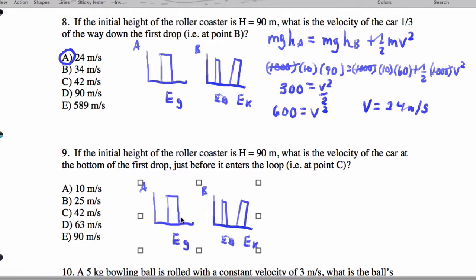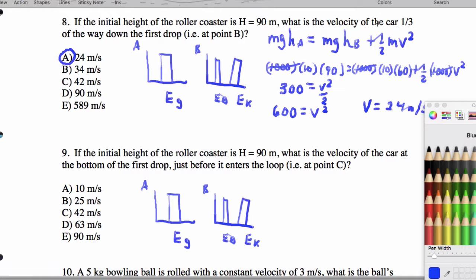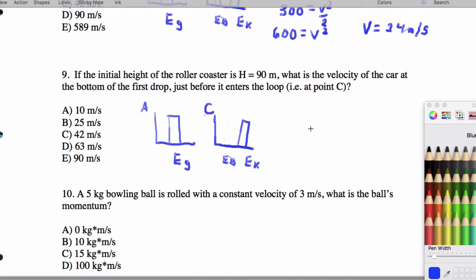With this energy graph, now that we're at C, we no longer have any gravitational energy because we're at the bottom of the hill. So what that means is that at point C we have all kinetic energy. So we'll end up getting mgh at A equals one-half mv squared, or 1000 times 10 times the height which is 90.